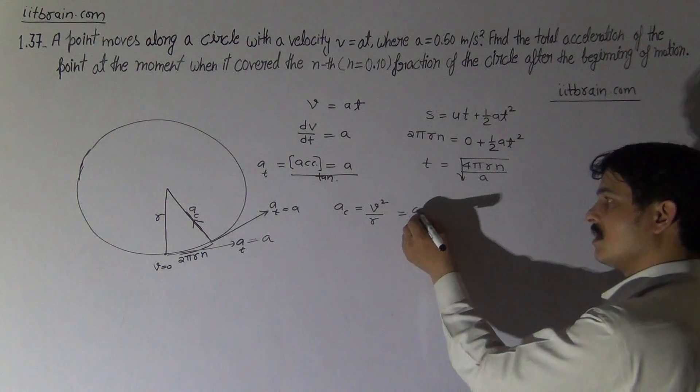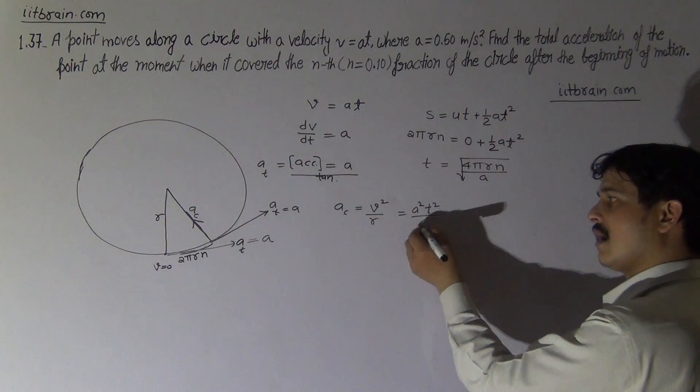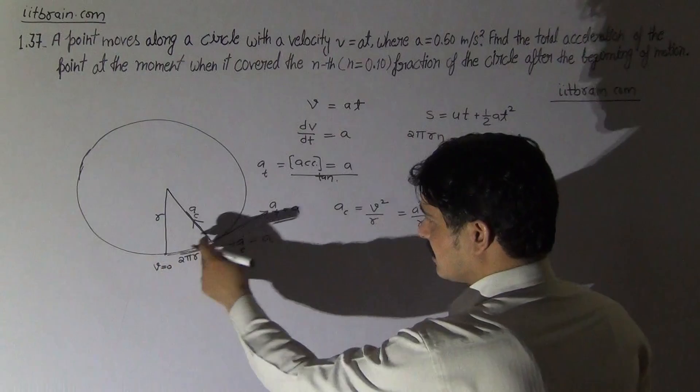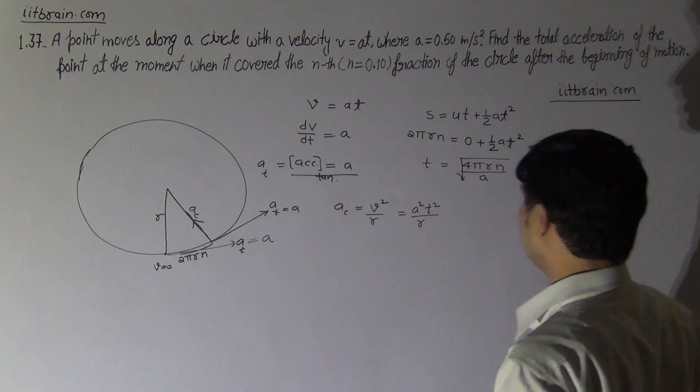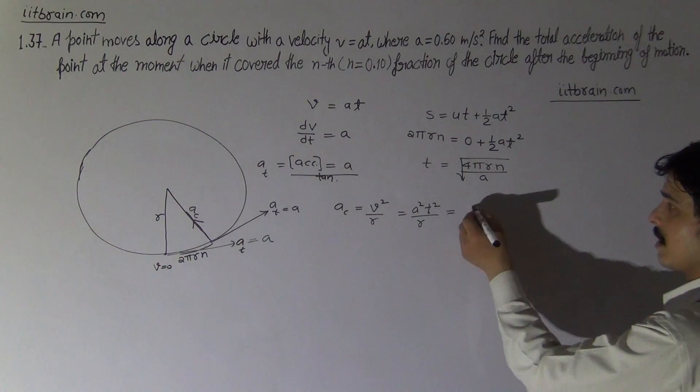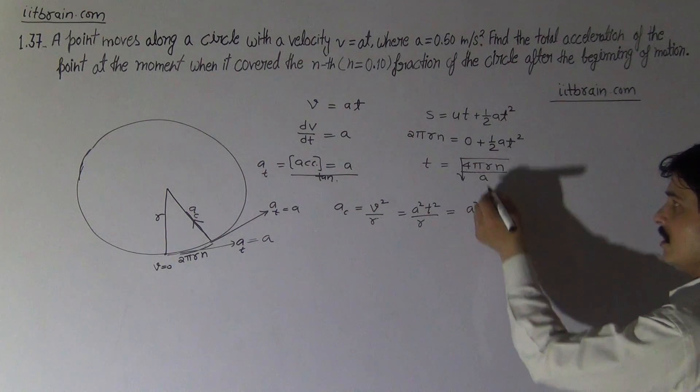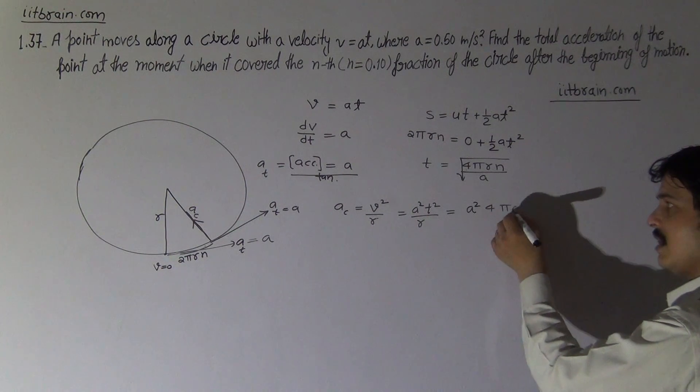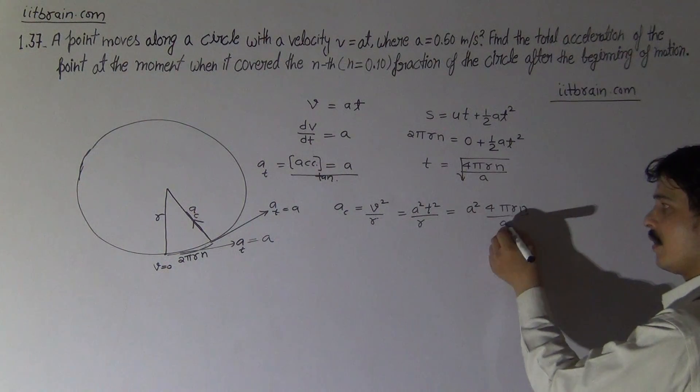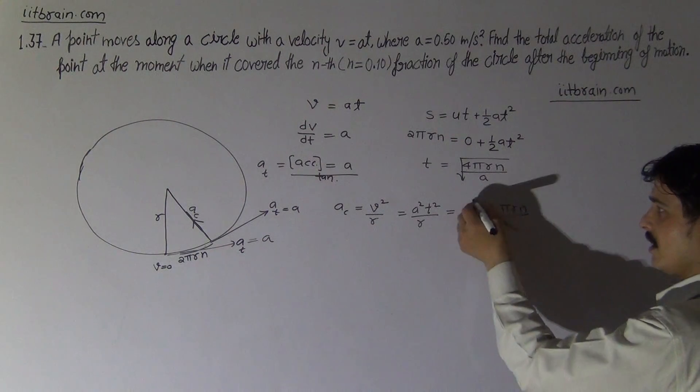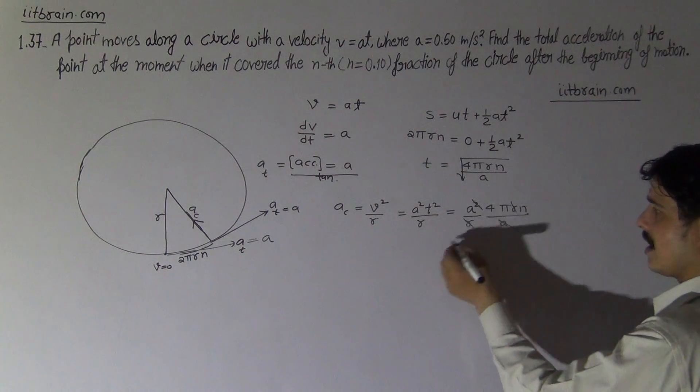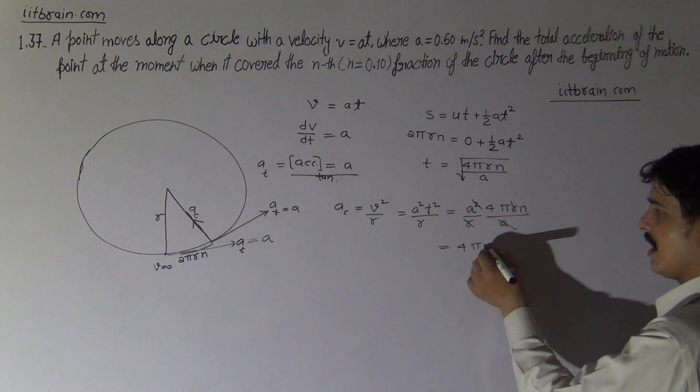So it is a²t²/r. And how much time we have to calculate here? Put the value of time, it will become a² times 4πrn/a upon r. Cancel an a and r term, you will get 4πna. This is centripetal acceleration.